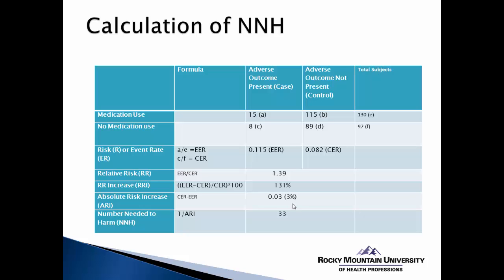Our final calculation is the numbers needed to harm. We take the ARI value in its decimal form and divide it into 1. This gives us a numbers needed to harm of 33, which means about 33 people will need to be exposed to the medication in order for one person to have the adverse outcome — in other words, one person experiencing the side effect.